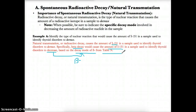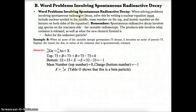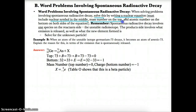Any time you decrease the amount of a radioactive isotope in a sample, the cause is natural transmutation or spontaneous radioactive decay, because you're losing particles somehow. Now let's talk about word problems involving spontaneous radioactive decay. For word problems, solve by writing a nuclear equation — include the nuclear symbol in the middle, mass number on top, and atomic number on the bottom for each species.